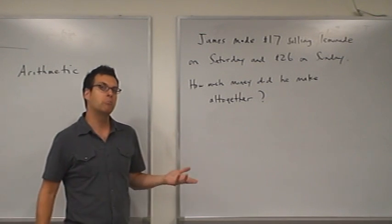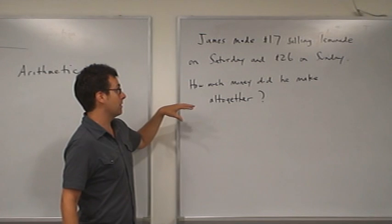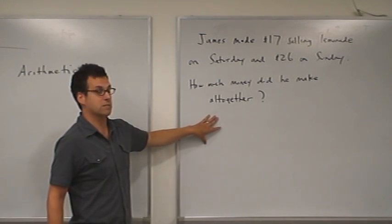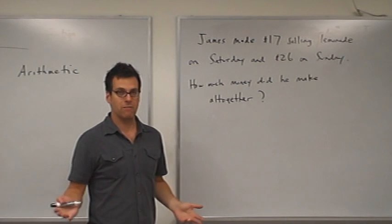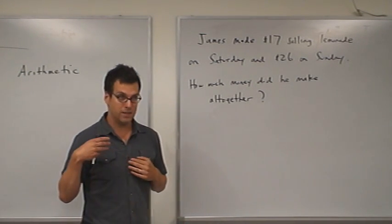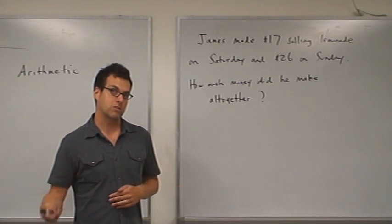Let's take a look at a pretty simple addition problem. James made $17 selling lemonade on Saturday and $26 on Sunday. How much money did he make altogether? We hope that the majority of our students are going to be able to just read this problem and figure out that the correct arithmetic needed is 17 plus 26.